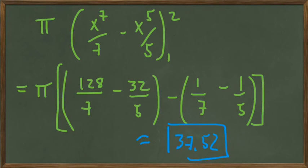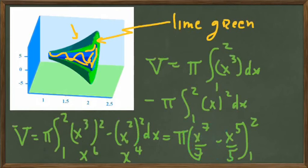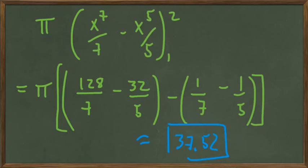So that gives us approximately 37.52. For this one, it's relatively easy to see that this number makes sense. Let's go back to this region. Actually, let's put a new one up.